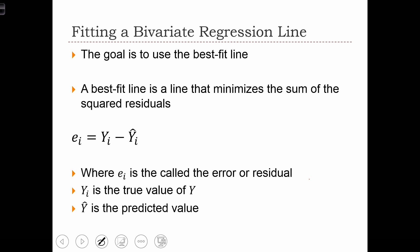In regression analysis, the best fitting line is the one that minimizes the sum of squared residuals, or the sum of squared differences between observed values of y and the values of y predicted by the regression model.